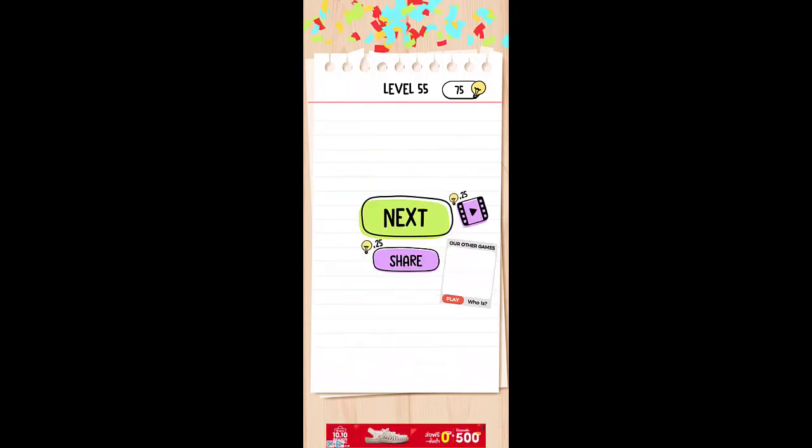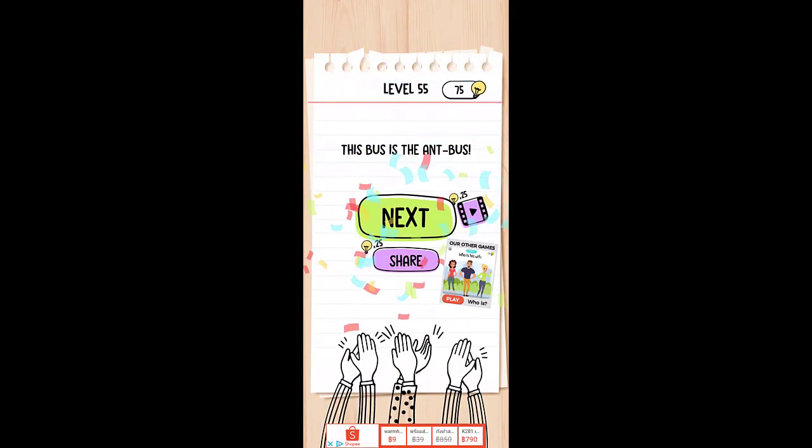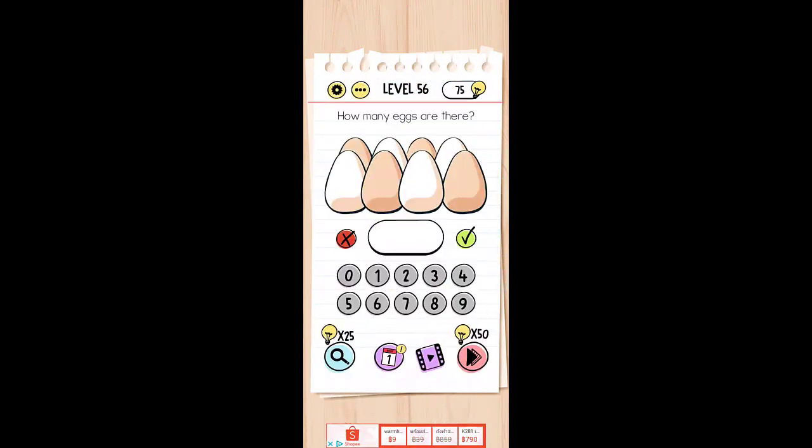How many eggs are there? As you can see, click on it. It's wrong, why? Because it's not an egg. So we actually have seven eggs.